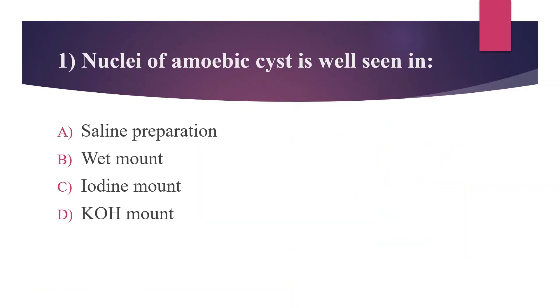First question: the nucleus of an amoebic cyst is well seen in which preparation? Option A: saline preparation. Option B: wet mount. Option C: iodine mount. Option D: KOH mount. The answer is Option C, iodine mount.